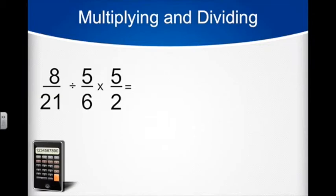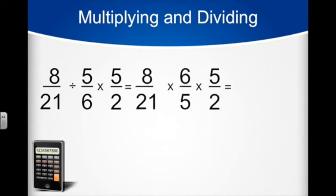To divide, we take the reciprocal of 5 6ths and rewrite the problem as 8 21sts times 6 5ths times 5 halves. Notice the reciprocal of 5 6ths is 6 5ths. We flipped it.